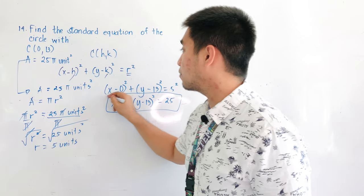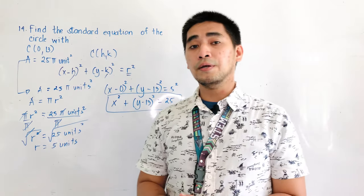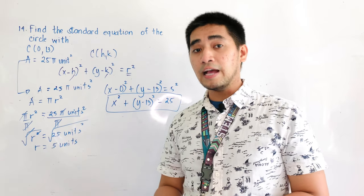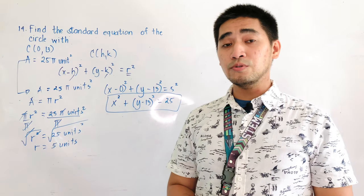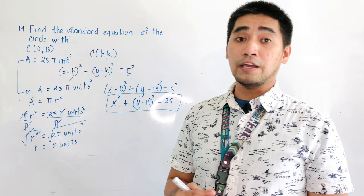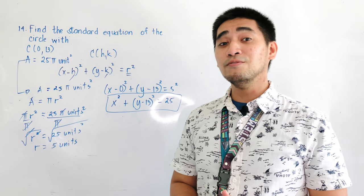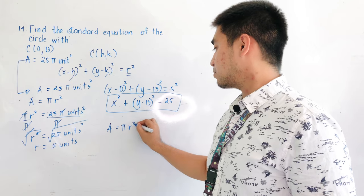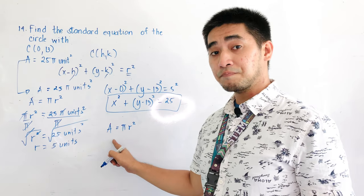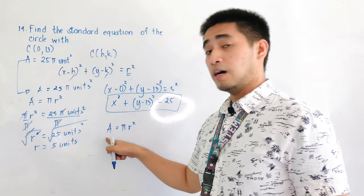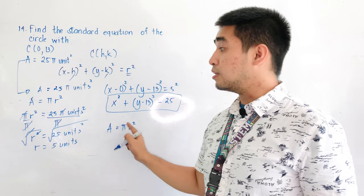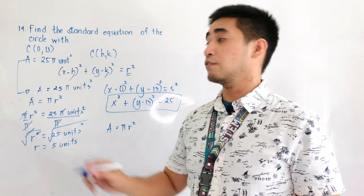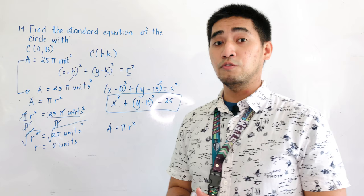Therefore, this is now our final answer. Always remember that if you are given an area and you need to find the radius, remember the formula of the area of the circle is just equal to A is equal to pi r squared. And if you're given the area, equate the formula for area to the given value. So for this one, that is 25 pi units squared.